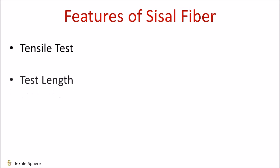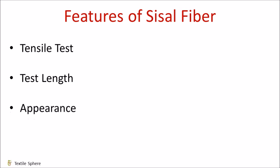The next is test length. Sisal fiber tensile strength and percent elongation decreases with increase in test length and Young's modulus. An average modulus increases with test length. When speed of testing increases, the Young's modulus and tensile strength increases. The next is appearance — sisal fiber is smooth, straight and yellow in color.